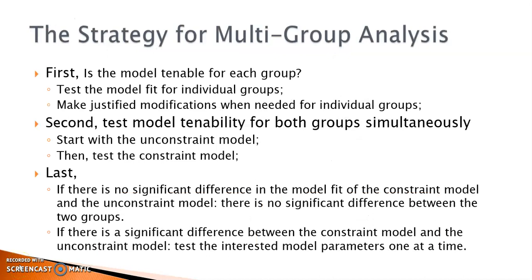If you remember from the example of the path analysis, we take three steps in multigroup comparison. In step one, we test whether the model is tenable for individual groups and make justified modifications when needed to improve model fit. In step two, we test model fit for all groups combined and compare the model chi-square of the unconstrained model with that of the constrained model.